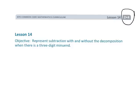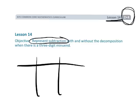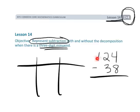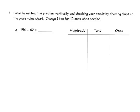This is second grade module 4 lesson 14. We're going to continue representing subtraction using the place value chart, only this time we're going to be using three-digit minuends. That first number is going to have three digits, and sometimes it's going to require borrowing or decomposition and sometimes it's not. In this problem we're being asked to solve by writing the problem vertically and then checking our results using place value chips.